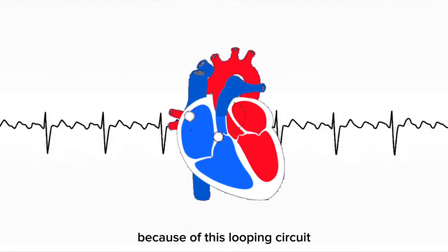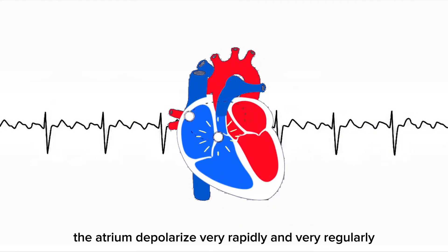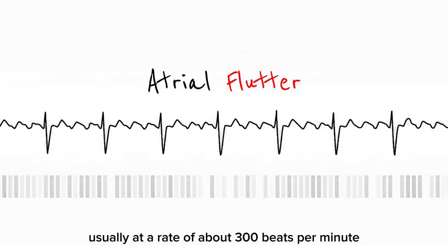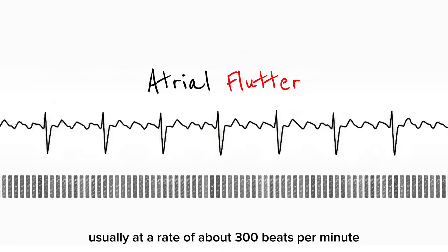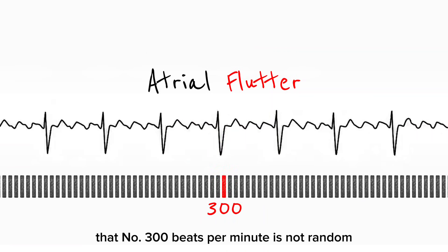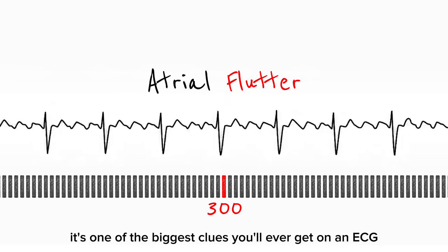Because of this looping circuit, the atria depolarize very rapidly and very regularly, usually at a rate of about 300 beats per minute. That number — 300 beats per minute — is not random. It's one of the biggest clues you'll ever get on an ECG.